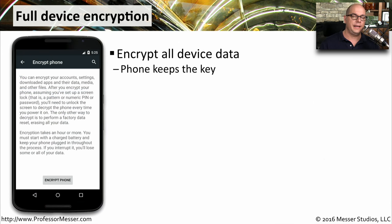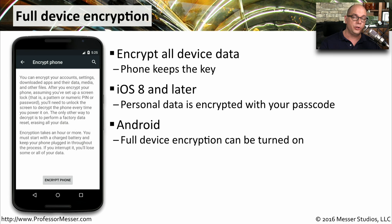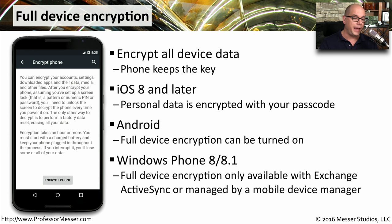Since our mobile devices contain so much personal information, we want to be sure the data stays protected. One way to do that is to encrypt everything on the device. In iOS version 8 and later, everything on the device is automatically encrypted based on the passcode you assigned. On Android, you can turn on full device encryption. For Windows Phone 8 and 8.1, full device encryption is only enabled through Exchange ActiveSync, or it can be turned on through a mobile device manager. Full device encryption is constantly changing on these mobile devices, so you should check with your mobile operating system to see what options are available.